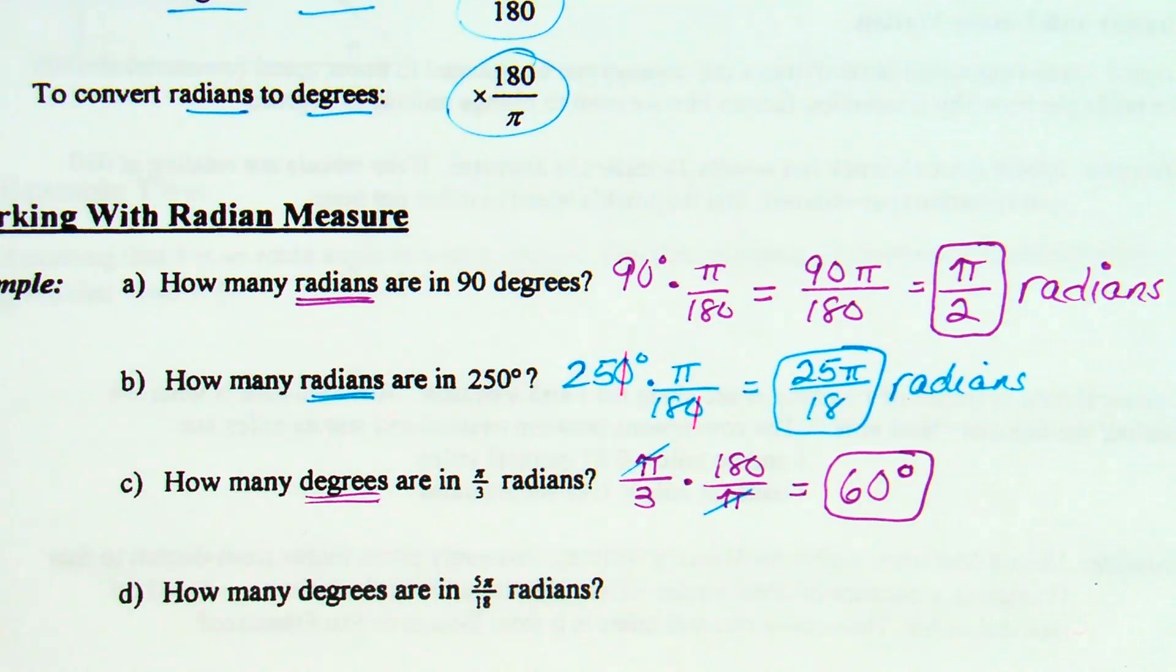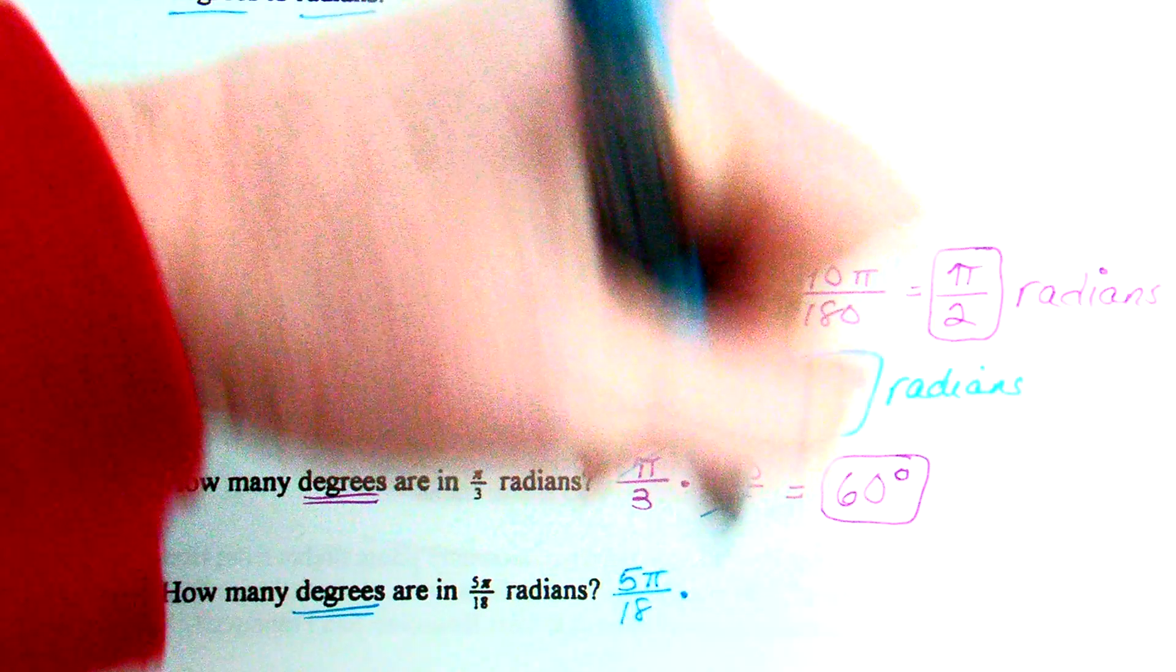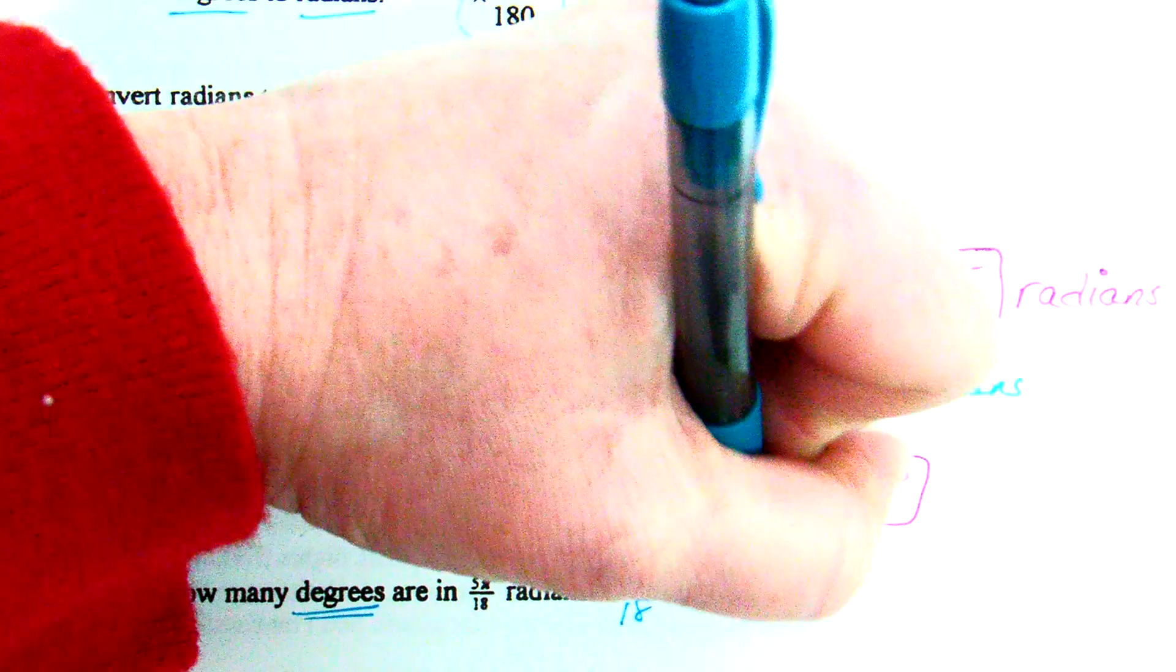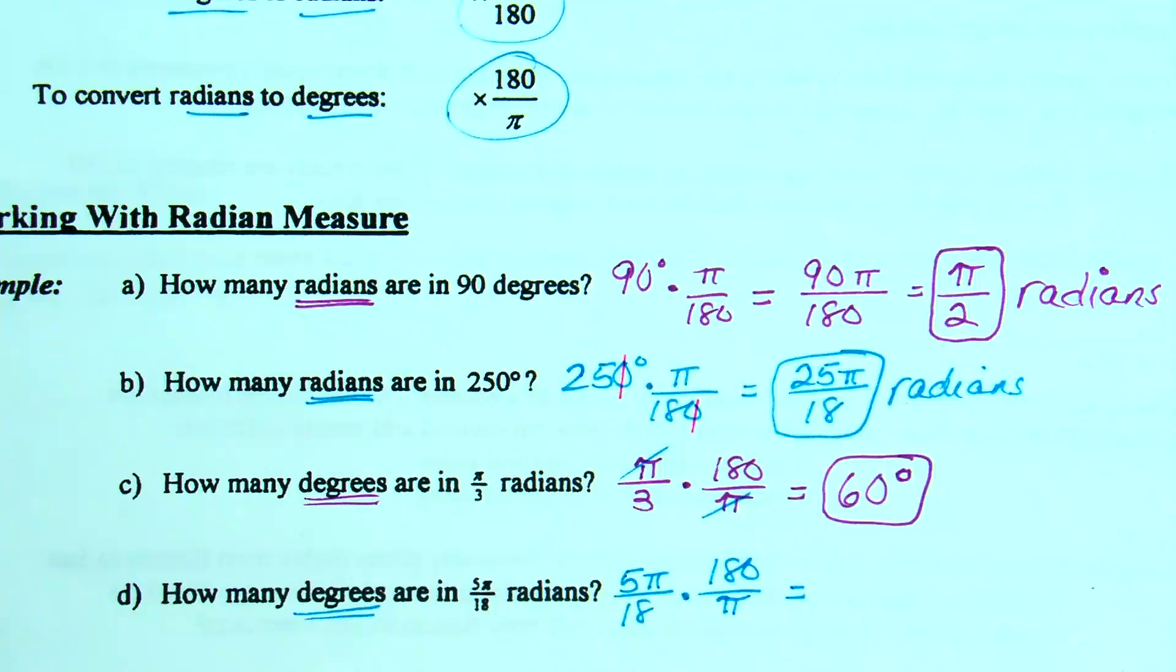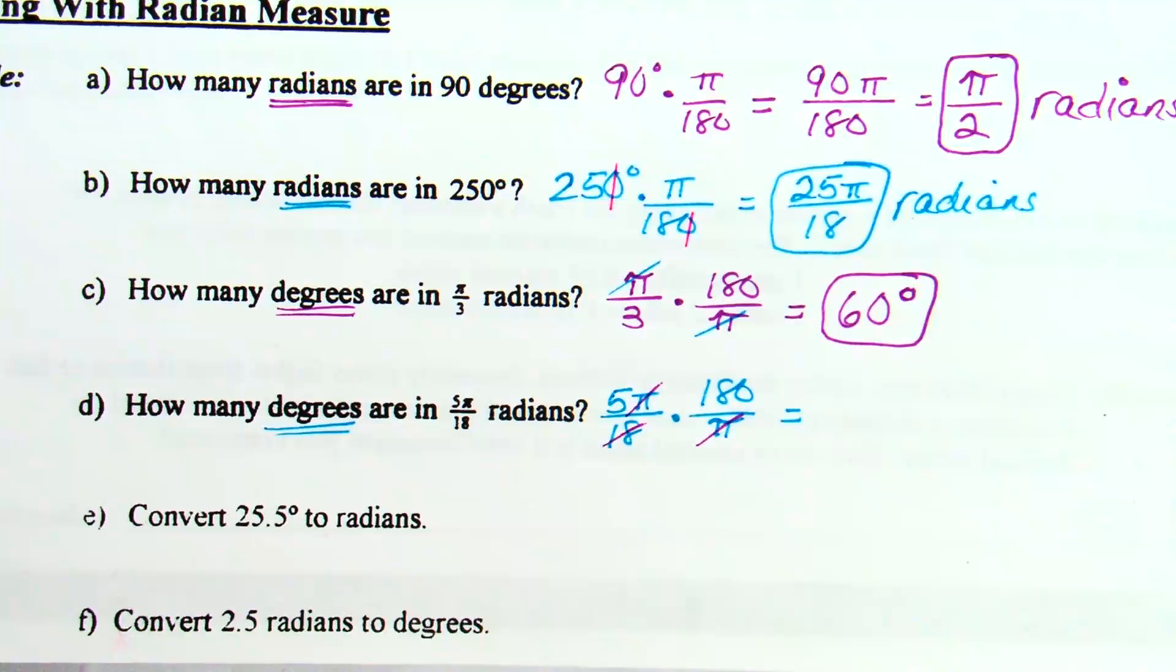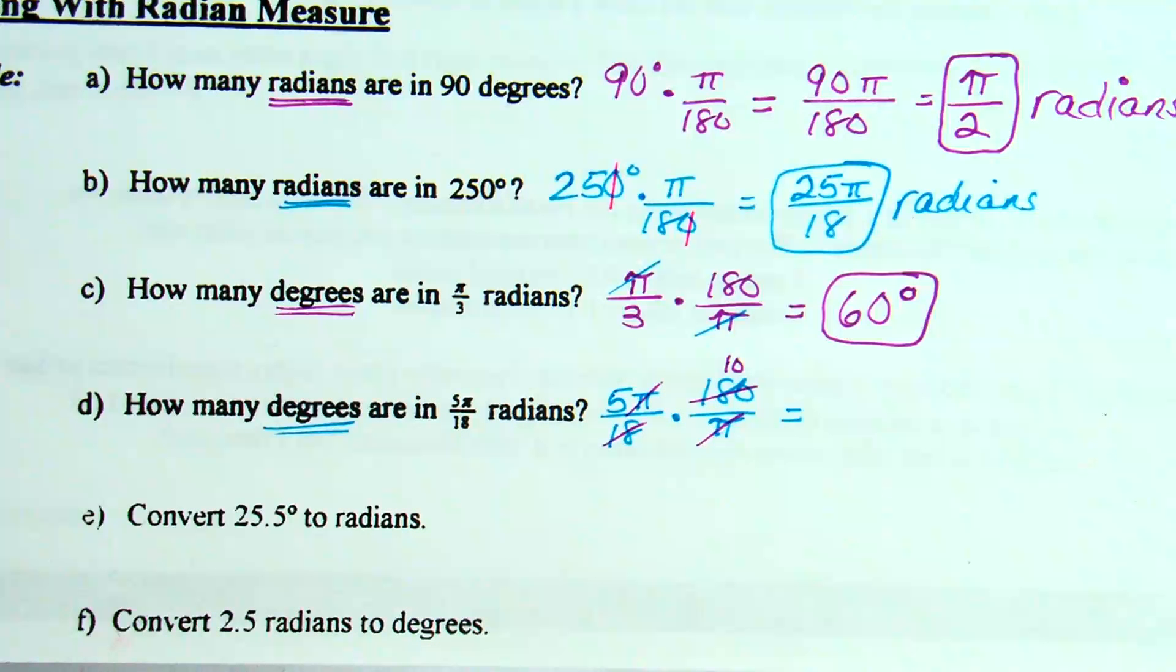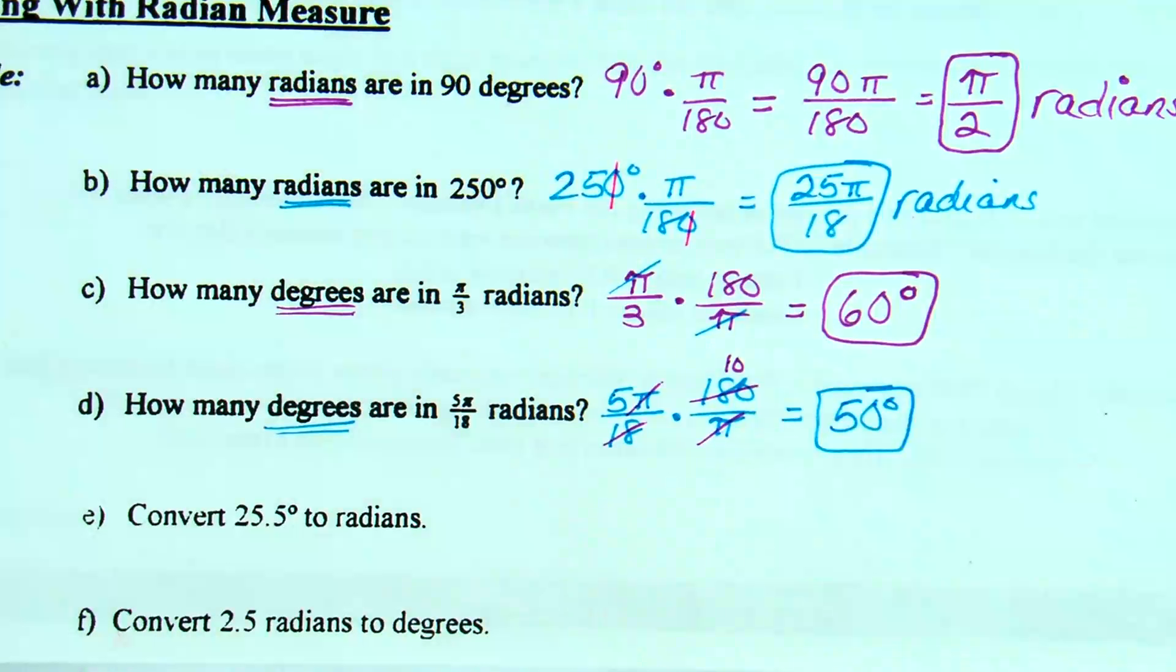How many degrees are in 5 pi over 18? Taking 5 pi over 18 and multiply by 180 over pi. What kind of math can we do there? The pi's can cancel. 18 and 180, you can both divide by 18. 18 divided by 18 is 1. 180 divided by 18 is going to leave me with 10. So what do I have remaining? 5 times 10 is 50. Not a typical number you'll see on the unit circle.